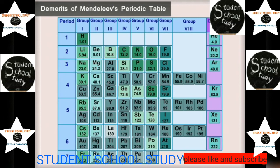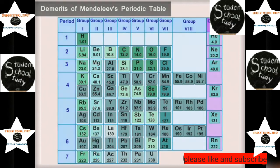Chemically dissimilar elements were placed in the same group — for example, highly reactive alkali metals are placed along with highly unreactive coinage metals in the same group. Chemically similar elements were placed at different positions — for example, copper, mercury, silver, and barium were scattered all over the periodic table, despite having similarities in properties.